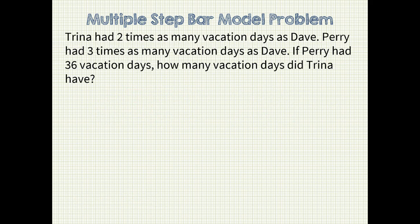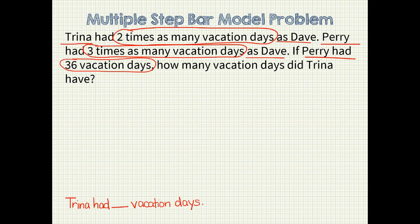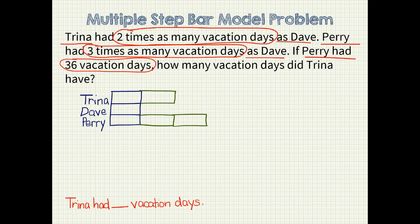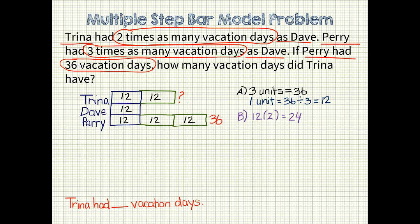Here's the last problem and it's just like the last one. I'd like you to pause the video and solve it on your own. When you are finished, start the video and check your answer. What did you write for your problem statement? Did you remember to identify the who and the what? Did you start out with equal sized unit bars and adjust them? Did you remember to add your question mark? Did you find that since three units equals 36, that means one unit equals 12? Did you find that Trina had 24 vacation days?